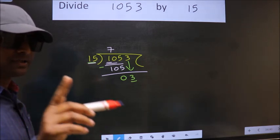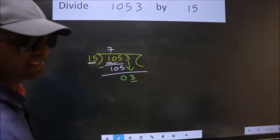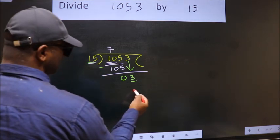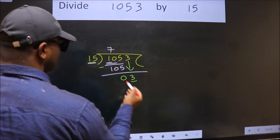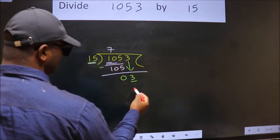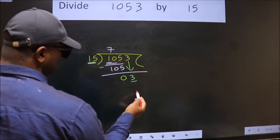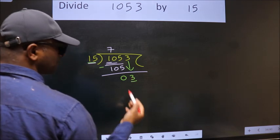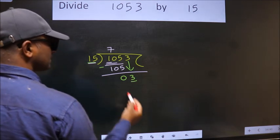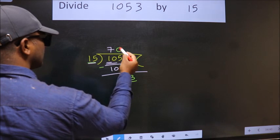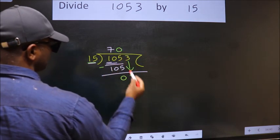Instead of that, we should think about which number to take here. If I take 1, we get 15, but 15 is larger than 3. So we take 0 here. 15 times 0 is 0.